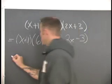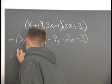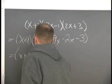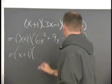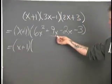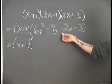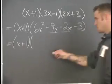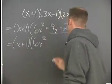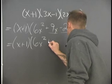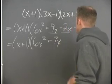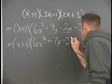Now we're going to gather our like terms and combine them. The only like terms here are this positive 9x and negative 2x. So that leaves us 6x squared plus 7x minus 3.